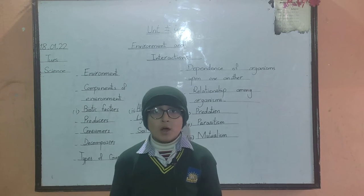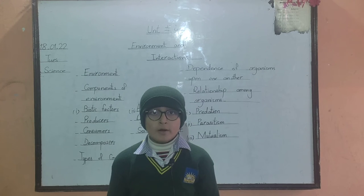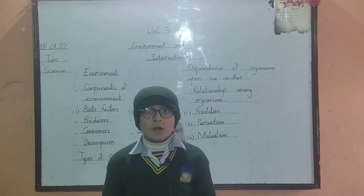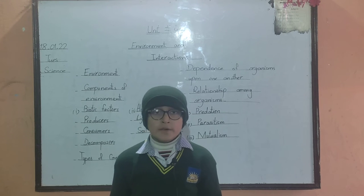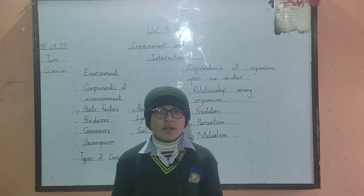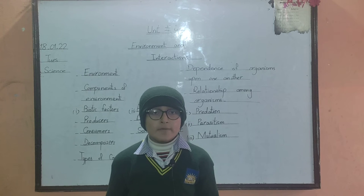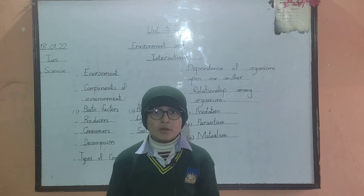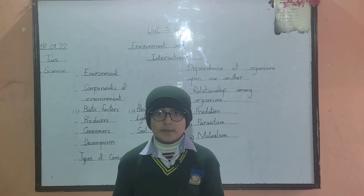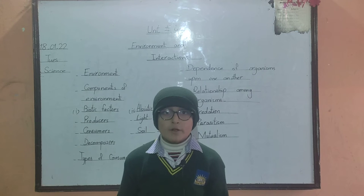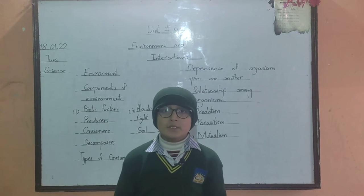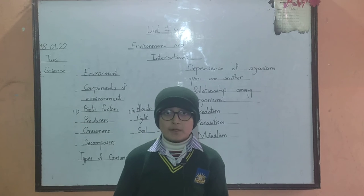There are two components of environment: biotic factor and abiotic factor. Biotic factor — all living things which affect our life is called biotic factor. For example, animal, plant, microorganism, etc. Abiotic factor — all non-living things which affect our life is called abiotic factor.